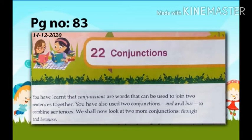We use 'and' to add information. So whenever we want to add information in our sentence, we use 'and'. And we use 'but' to show an opposite idea. We use 'but' to join two sentences when the second sentence is just opposite of the thing which we are expecting according to the first sentence.